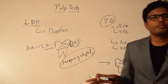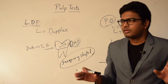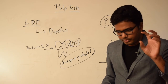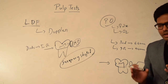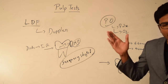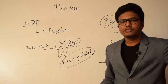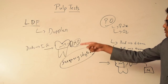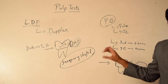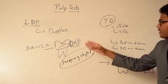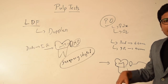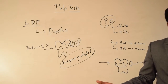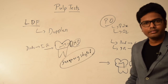To summarize: laser Doppler flowmetry and pulse oximetry both work on the principle of analyzing the vitality of a tooth based on its vasculature. Since they objectively analyze the vasculature of the pulp, they are considered more accurate than the subjective findings seen in thermal tests and electrical pulp testing. Laser Doppler flowmetry works on the Doppler principle — a diode emits infrared rays, moving red blood cells within the vasculature cause frequency shifting, this shift is detected by the sensor giving us the velocity of moving RBCs, based on which we analyze the status of the pulp.